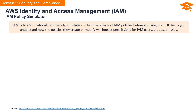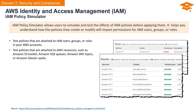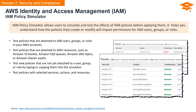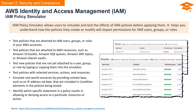The IAM policy simulator is your tool to simulate and test IAM policies before making them live. You can test policies attached to IAM users, groups, or roles; test policies linked to AWS resources like Amazon S3 buckets, SQS queues, SNS topics, or Glacier Vaults; test new policies not yet attached by typing or copying them into the simulator; and simulate real-world scenarios by adding context keys like an IP address or date in condition elements. The simulator helps identify the specific statement that allows or denies access to a particular resource or action.